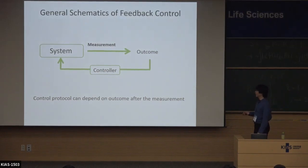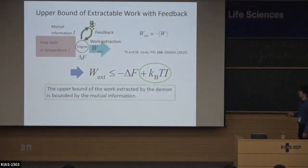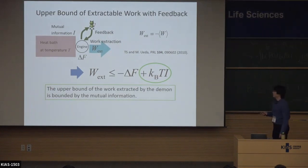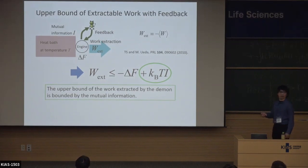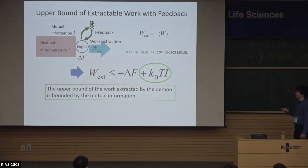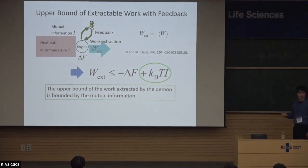In this very general setting, we can prove the second law of thermodynamics by incorporating the information term. Without Maxwell's demon, the work that can be extracted from the system is bounded by the free energy difference delta F. But if there is a Maxwell's demon, the upper bound of the extractable work is greater than the conventional bound, and the new bound is given by the mutual information multiplied by the Boltzmann constant and the temperature.